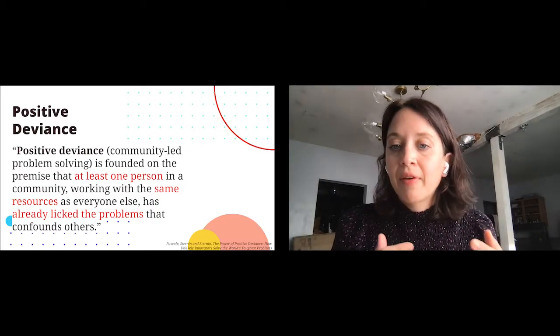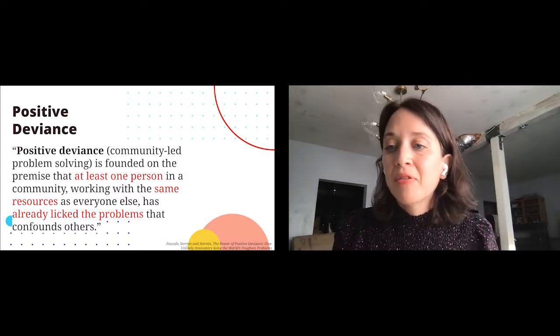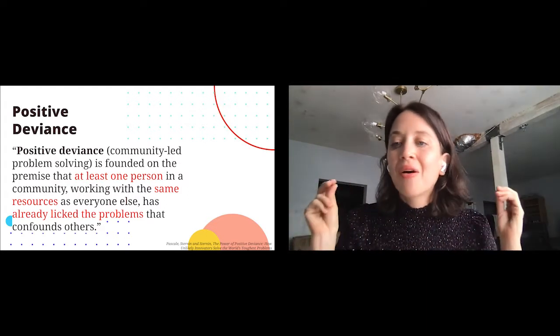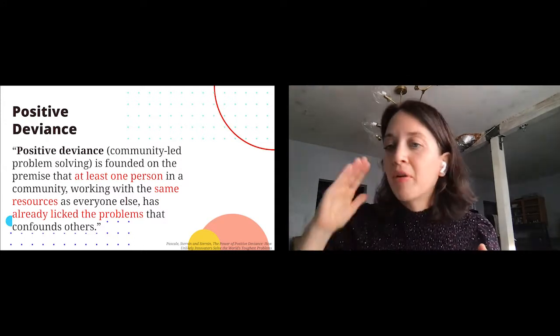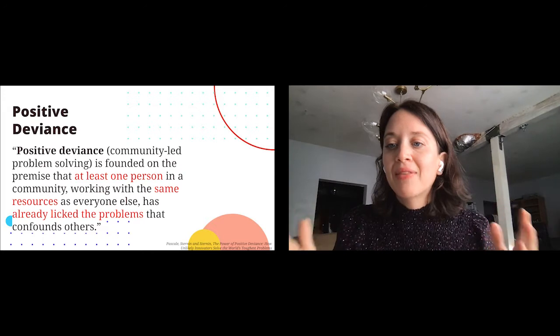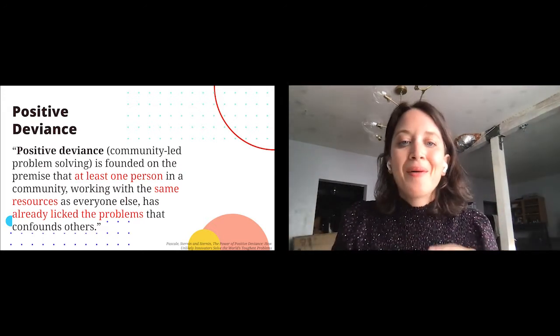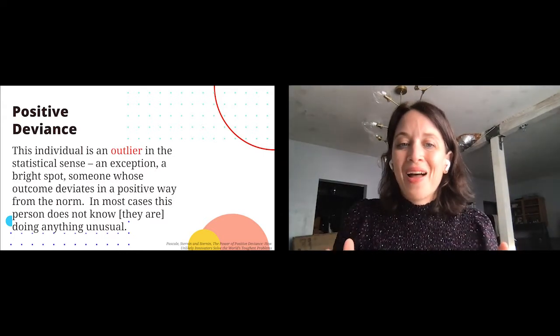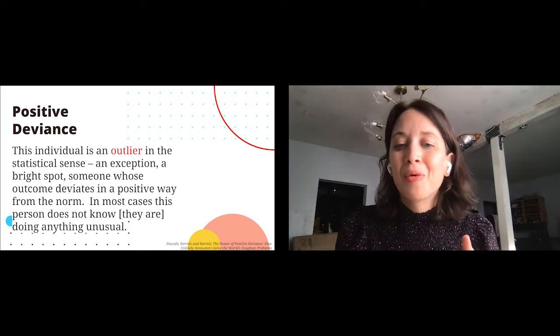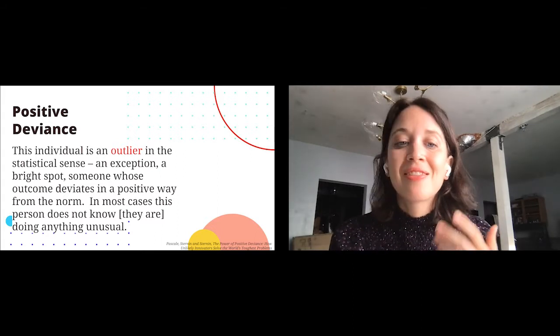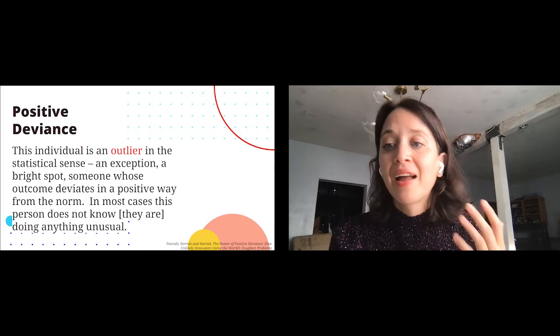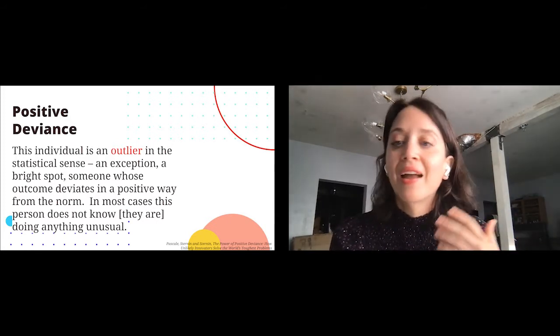Positive deviance really is about community-led problem solving. It's founded on the premise that there is at least one person within a community who has the same resources as everyone else but has already solved the problem — found a way against all odds to meet that goal when no one else had. This individual or bright spot is an outlier: statistically, they're an exception whose outcome deviates from the norm. What you'll find is that these bright spots generally don't know they are bright spots. The caregivers with healthy children didn't know what they were doing was special — they were just doing it because it felt natural and they'd seen success.